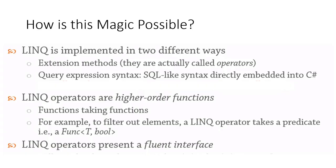There are actually two ways to implement LINQ. The first way is with a number of extension methods — these are called operators, and this is what I normally prefer. The second way is with query expression syntax, which is also fine depending on your preferences. It's a lot like the SQL you use for databases, but it's directly embedded into C-sharp. LINQ operators are higher-order functions — you can give them functions. It's the same as those filter and map things we used in Haskell. LINQ operators present a fluent interface.